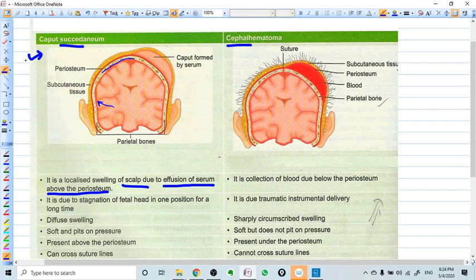And just before the cranium we see another layer that is periosteum, and above the periosteum we see subcutaneous tissue and cutaneous tissue. So where we see the effusion of the serum? Into the scalp, into the scalp subcutaneous tissue. That is called caput succedaneum.